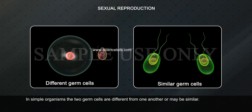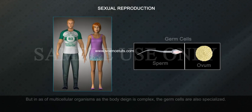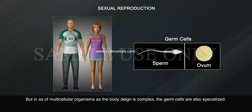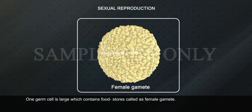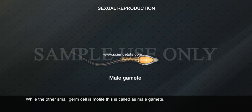In simple organisms, the two germ cells may be different from one another or may be similar. But in multicellular organisms, as the body design is complex, the germ cells are also specialized. One germ cell is large and contains food stores — this is called the female gamete. While the other small germ cell is motile — this is called the male gamete.